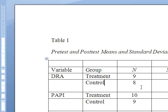Under the N column, we've indicated how many people the analysis was based on. For example, let's assume there were a few missing data points. Although 10 people were in the treatment group and 10 in the control group, only 9 and 8 completed the DRA.